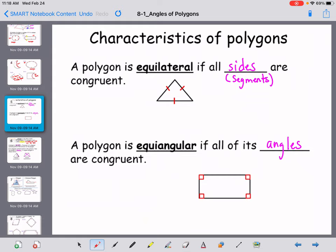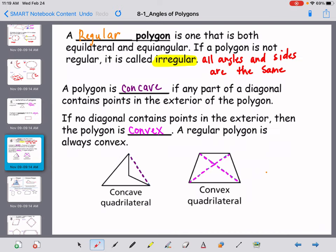So some other characteristics of a polygon. These two things are something you've learned before. We call a polygon equilateral if all of the sides are congruent, and it's equiangular if all of its angles are congruent. A regular polygon is a polygon that is both equilateral and equiangular, so all of the segments and all of the angles are going to be the same.